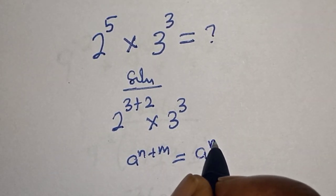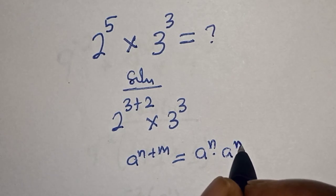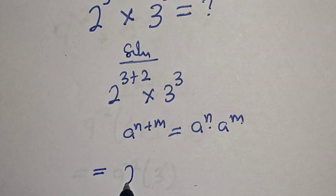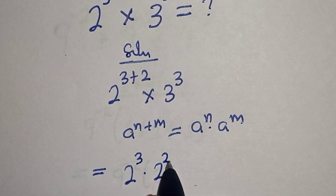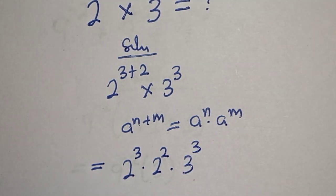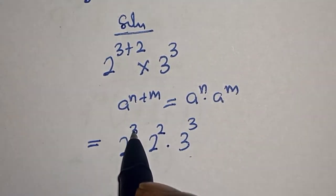And this is 2 raised to power 3 multiplied by 2 square multiplied by 3 raised to power 3. Then remember this is to the power of 3 and this is to the power of 3.